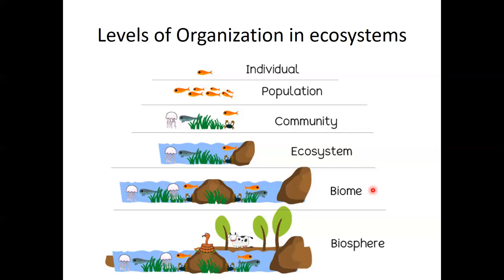A biome is a group of ecosystems. You can see that there are now more individual populations living in farther-apart reaches — multiple ecosystems inside a larger area. This pictured example would be the saltwater biome.